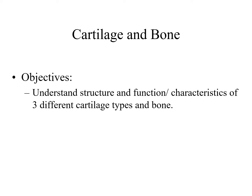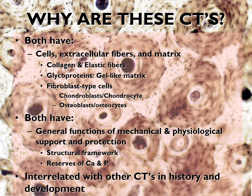The first question: why are cartilage and bone considered connective tissue? There are three reasons. First, both of them have cells, extracellular fibers, and matrix — the same components as connective tissue generally. In cartilage and bone, we see collagen and elastic fibers, a glycoprotein gel-like matrix, and fibroblast-type cells. However, in cartilage we call them chondroblasts and chondrocytes for mature cells, and osteoblasts and osteocytes for the mature cells of bone.